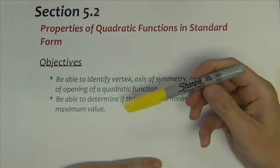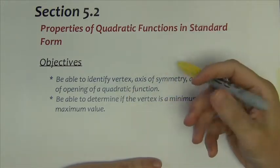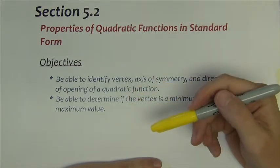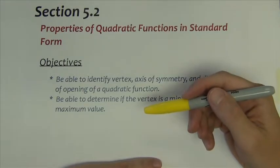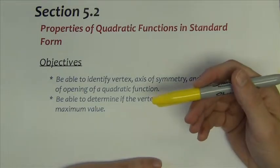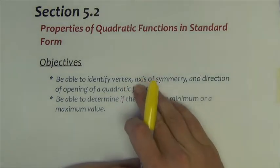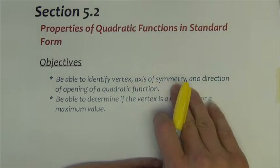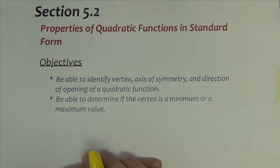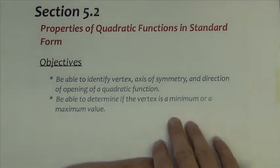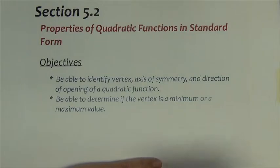Section 5.2, titled Properties of Quadratic Functions in Standard Form. What we're going to do is look at how we can graph quadratic functions in standard form versus what we had done in the last section, which was vertex form. We'll look at how to find the vertex, the line of symmetry, whether it opens up or down, whether a quadratic function has a minimum or maximum value, and the domain and range.